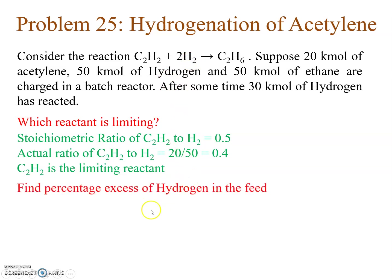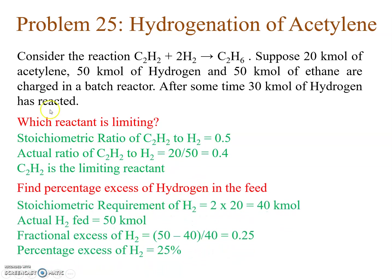Since hydrogen is in excess, let's find the percentage excess of hydrogen in the feed. Based on the limiting reactant acetylene, we find how much hydrogen is required to completely react with 20 kilo moles of acetylene. One mole reacts with two moles of hydrogen, so 20 moles of acetylene will react with 40 moles of hydrogen, but the actual feed contains 50 kilo moles. The fractional excess is (50 minus 40) divided by 40, equal to 0.25, or 25% excess hydrogen.